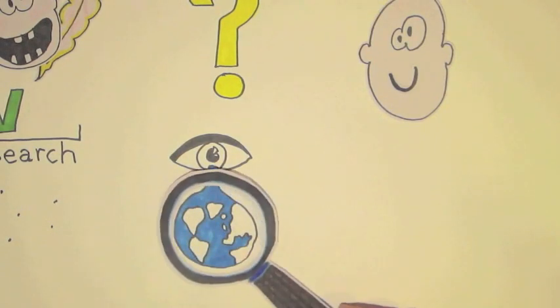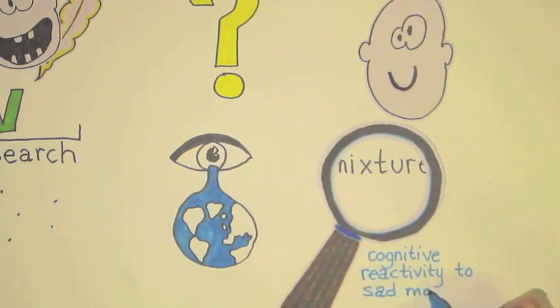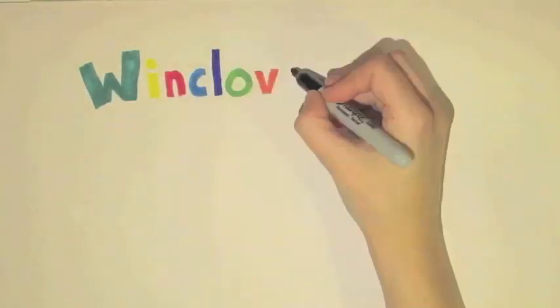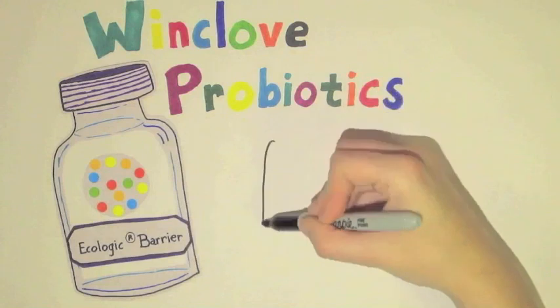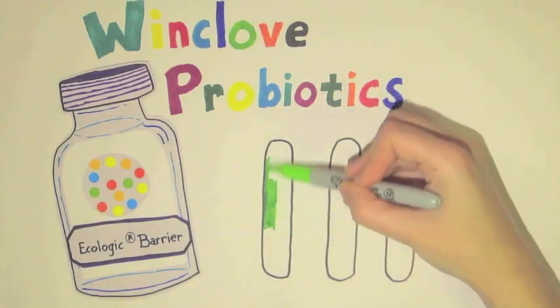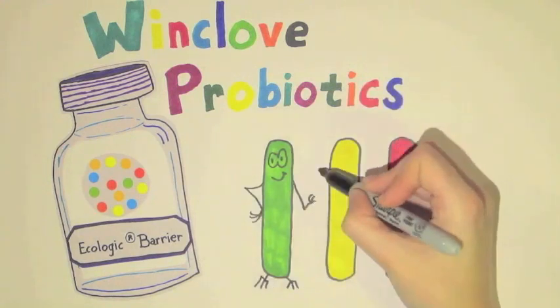The current study investigated this by looking at the effect of a probiotic mixture on cognitive reactivity to sad mood. This mixture, developed by Winclove Probiotics and called Ecologic Barrier, contains eight different probiotic bacteria, among which bifidobacteria, lactobacilli, and lactococci.